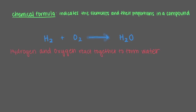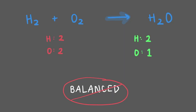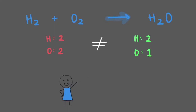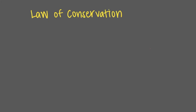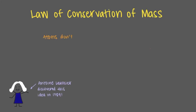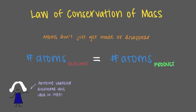You may notice that the chemical equation we just wrote is not balanced. The number of atoms of each element is not the same on both sides of the equation. That's a problem. It is important for scientists to ensure chemical equations are balanced in order to follow the law of conservation of mass. Atoms don't just get made or disappear. However many atoms we start with in a reaction, we need to have exactly the same number when we're done.